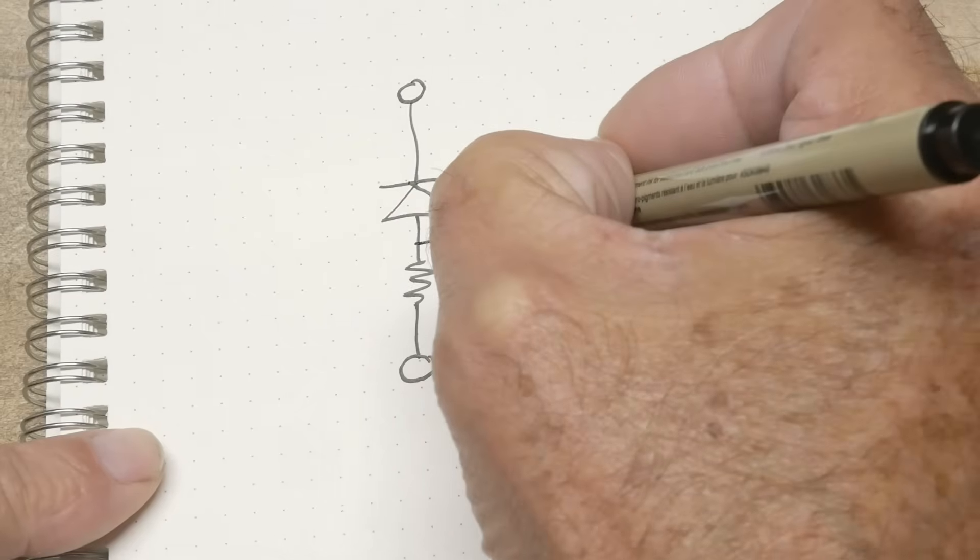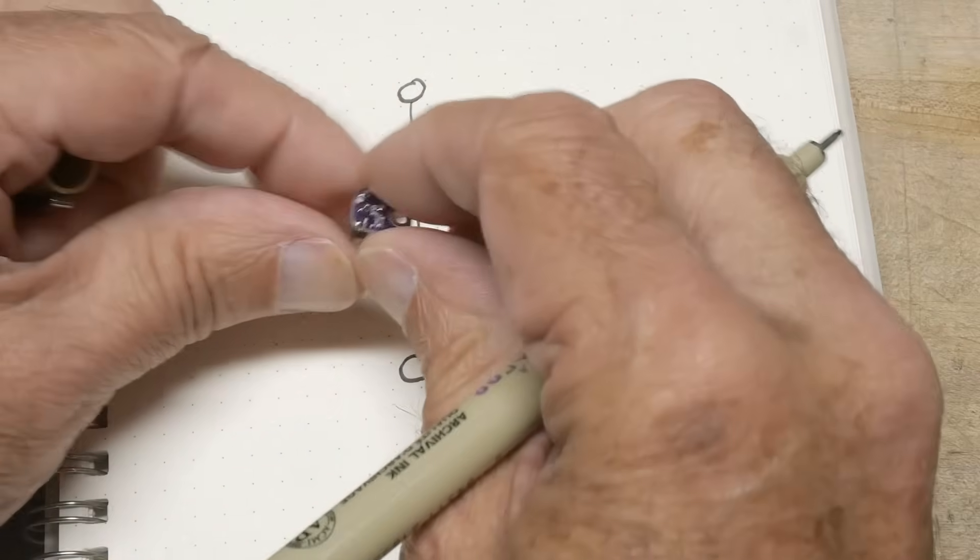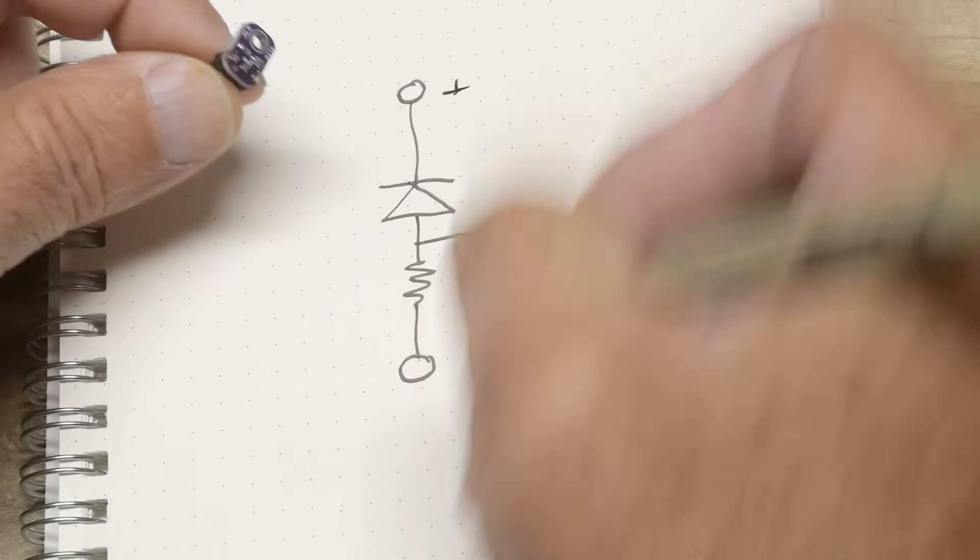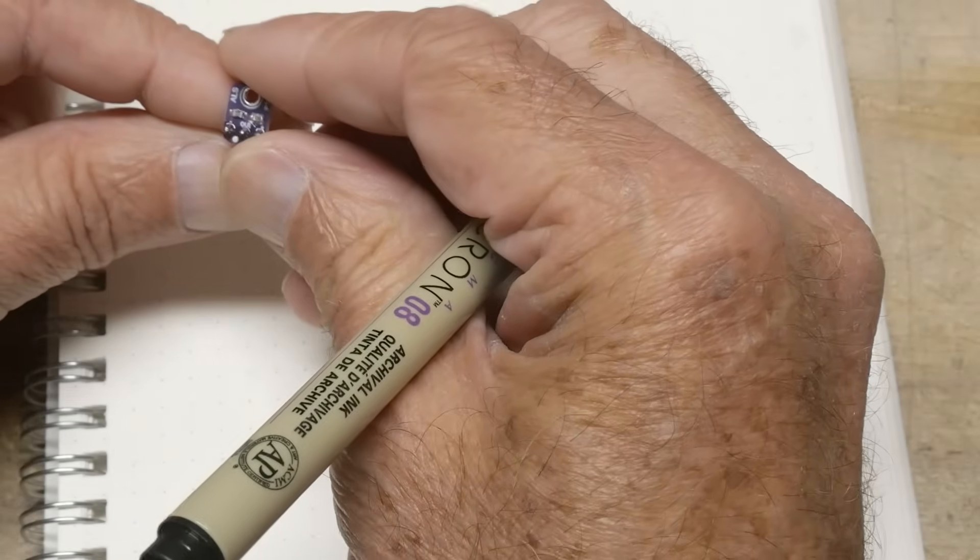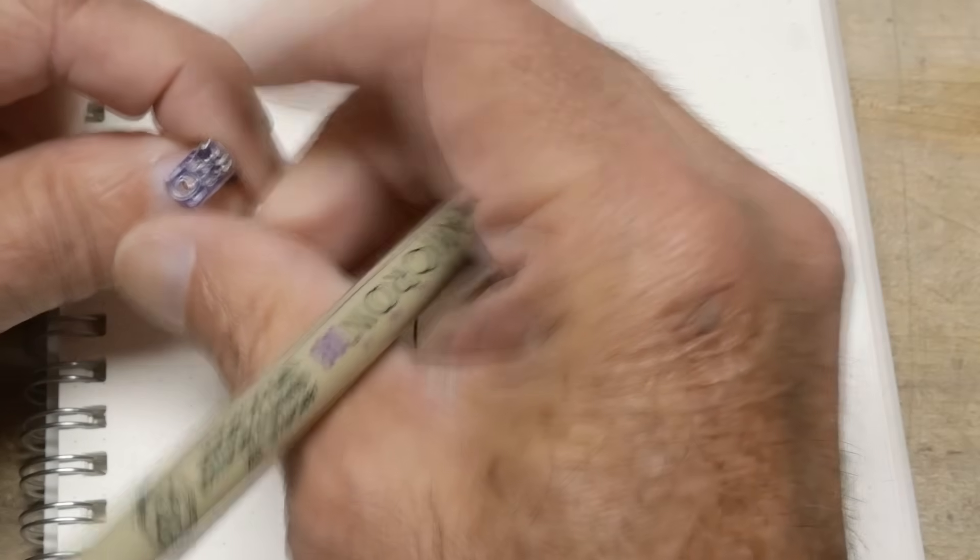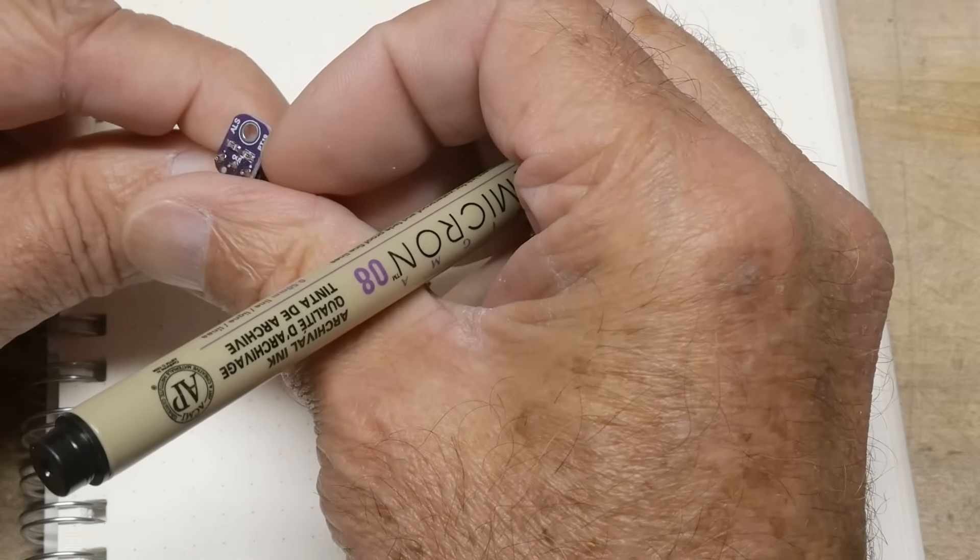And there's a connector here. Okay, so they're marked plus, minus, and plus, minus, and out.